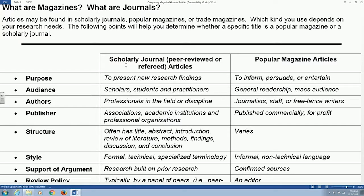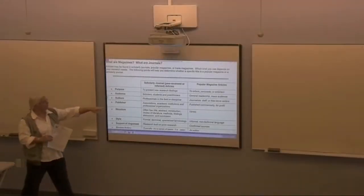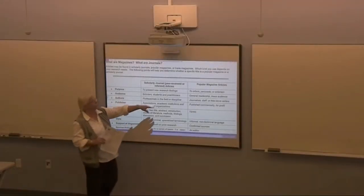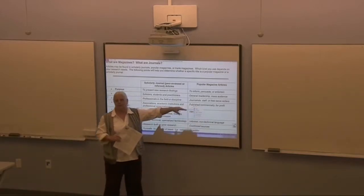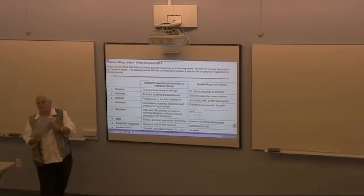We have criteria set up for scholarly sources, and we compare that to popular magazines, and at the bottom of the sheet, trade magazines. We have different purposes and different publishers for these sources. All we're suggesting is: stop for a minute and evaluate and review what you have before you start using it, to make sure it's factual, up-to-date, and credible. We're suggesting you try to use materials published by professional associations or academic institutions — as opposed to maybe someone trying to make money publishing that article.